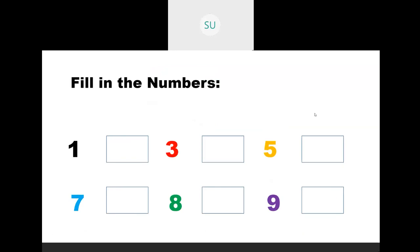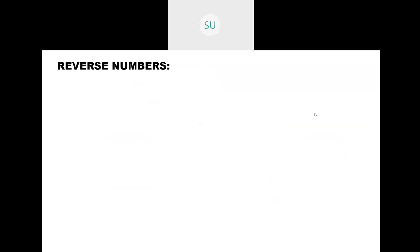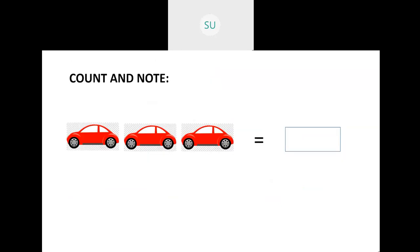Then reverse numbers — we saw how to read numbers in reverse order. Starting from 9, 8, 7, 6, 5, 4, 3, 2 and 1. So these are the reverse numbers.